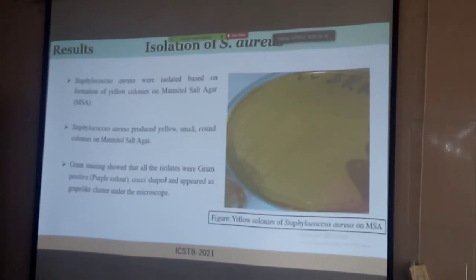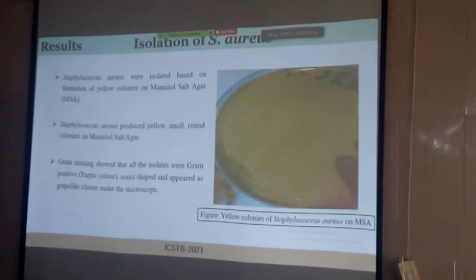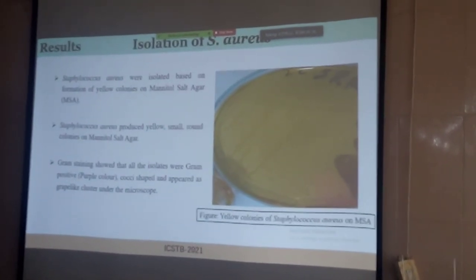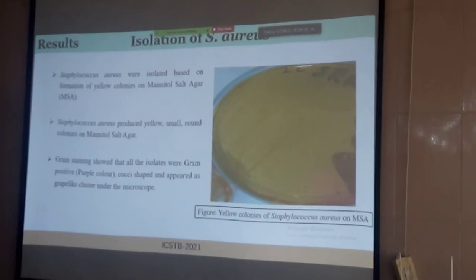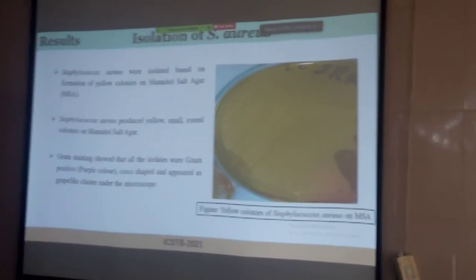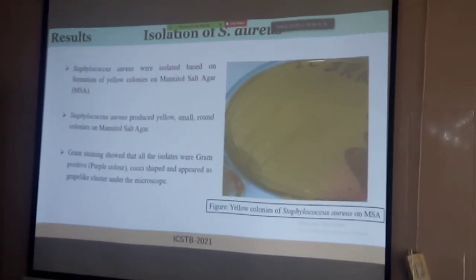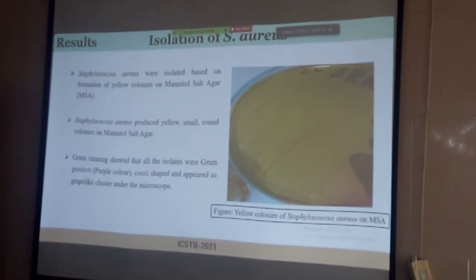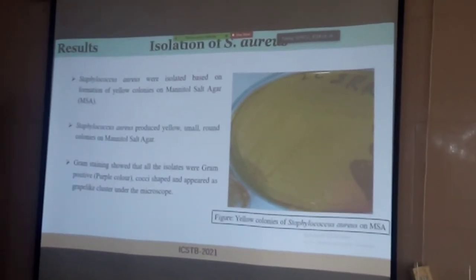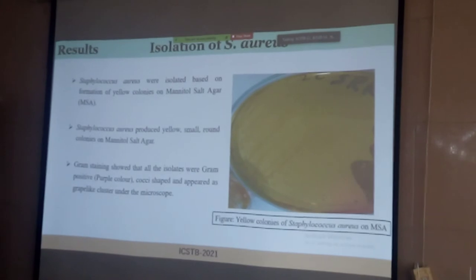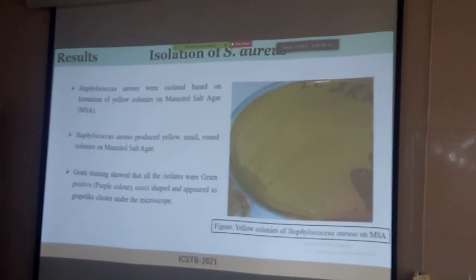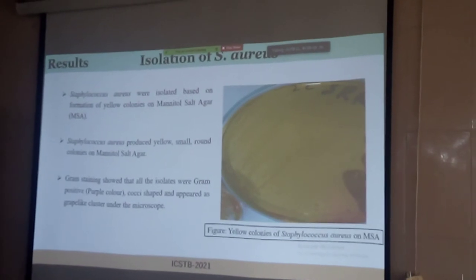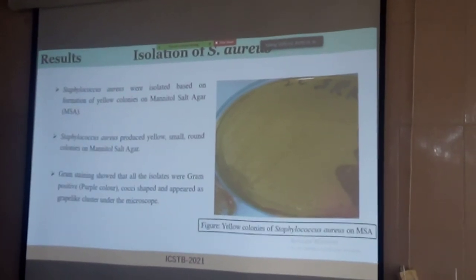Firstly, we collected clinical samples such as pus and blood, and we cultured them on mannitol salt agar. It is a highly selective media for Staphylococcus aureus, because it contains 7.5% salt, so only halotolerant bacteria can grow on this media. We also performed gram staining and observed cultural characteristics to confirm its isolation.